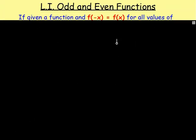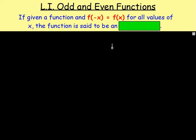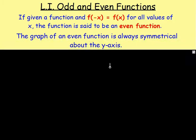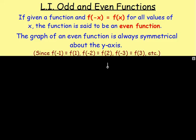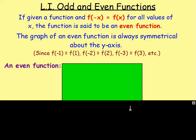What is that all about? Well, let's say we are given a function f of x. Imagine if we worked out f of negative x and we found that was the exact same thing as f of x. Well, what you would say then is that that function is an even function. So if f of negative x works out to be f of x, then it is even.